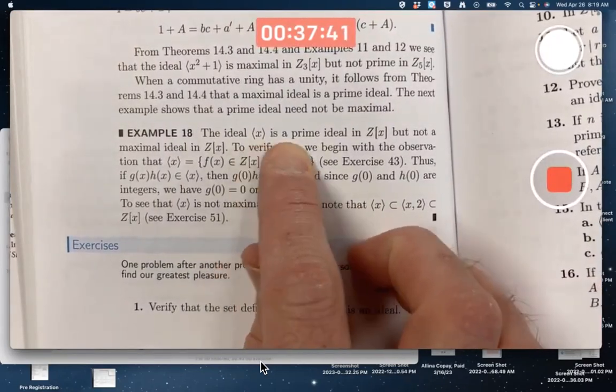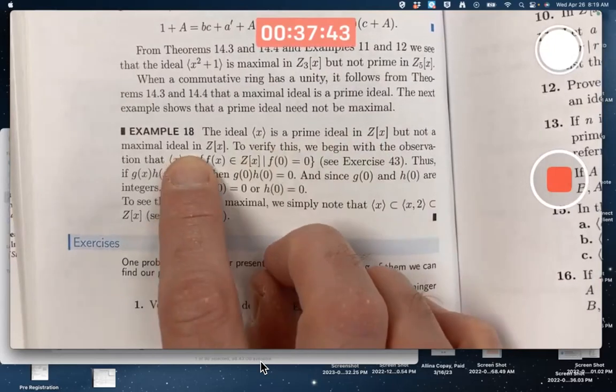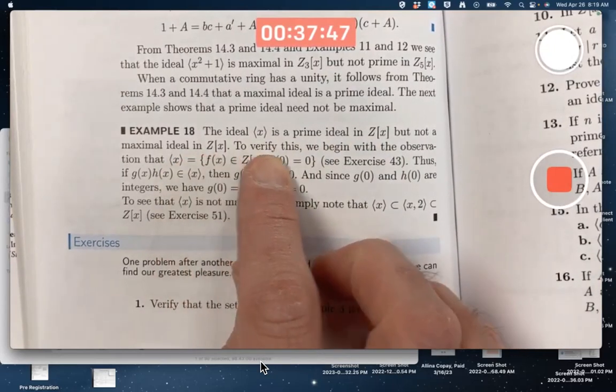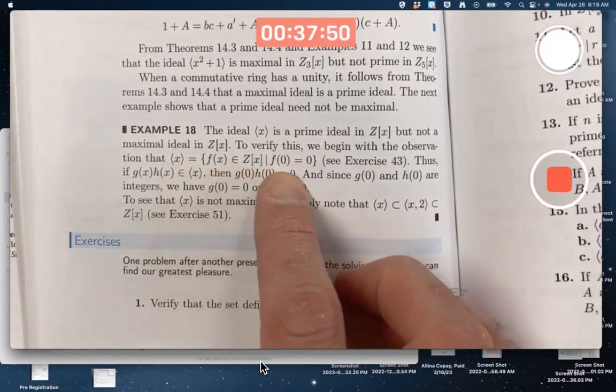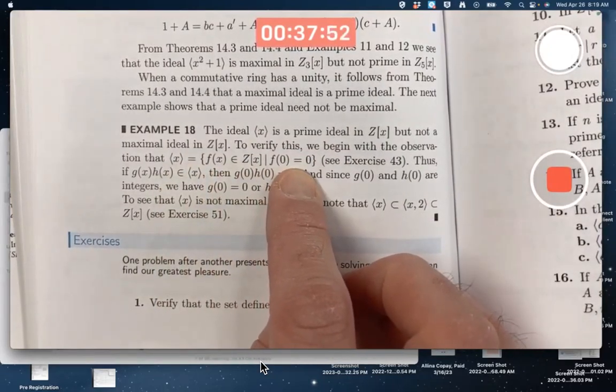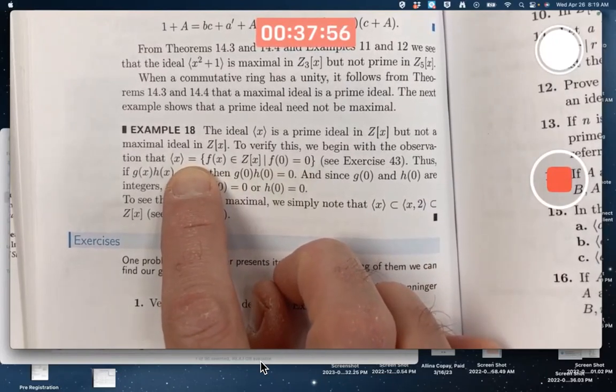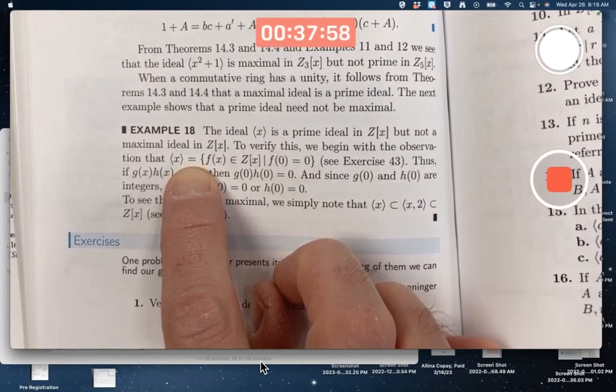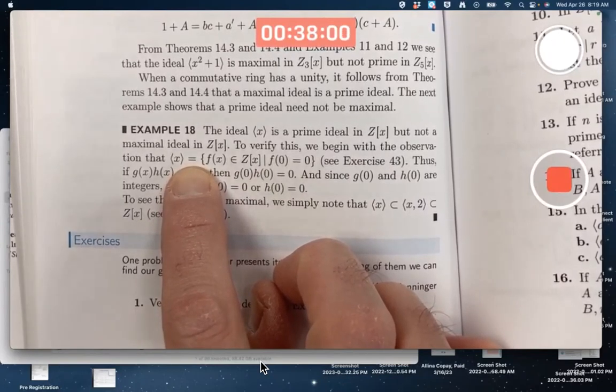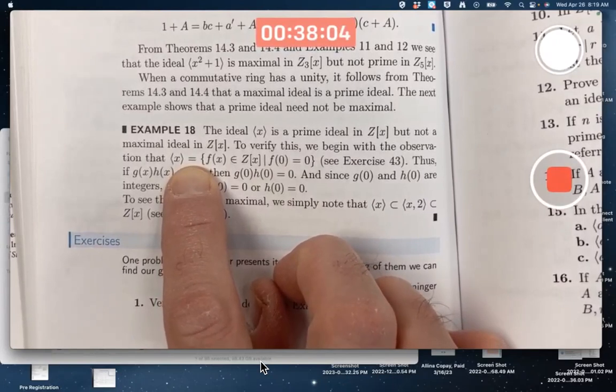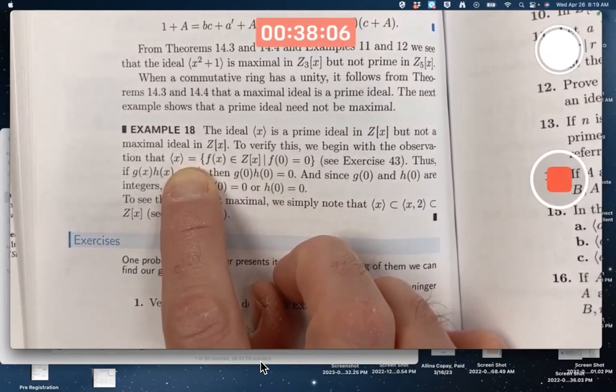The claim is this ideal is prime in Z[x] but not maximal. What would that mean? Well, okay, verify this. Begin with the observation that this is all the polynomials that have zero constant term. This is ideal generated by x, the plain old polynomial x. x is not representing an arbitrary abstract ring element; it's our actual polynomial here.